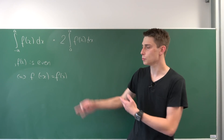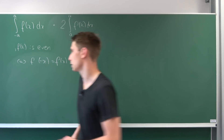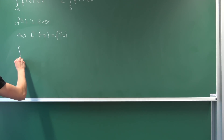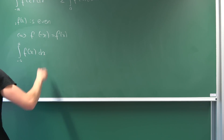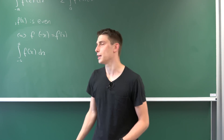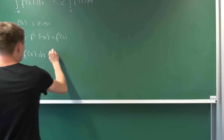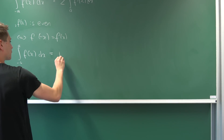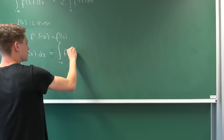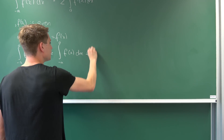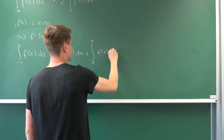We can use this fact right here to prove this statement. So at first I would like to take a look at this integral once again — the integral going from minus a to a of this even integrand f of x. Now we can use the linearity of the integral to break this up into the sum of two integrals: the first one going from minus a to zero of the very same integrand, and adding the integral from zero to a of f of x dx to it.